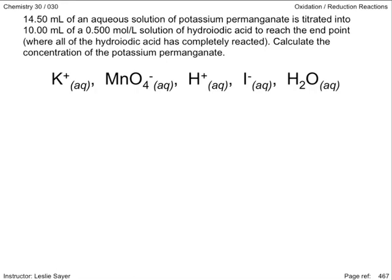Next we identify which substances or combination of substances are the strongest oxidizing agent and the strongest reducing agent. The permanganate ion in combination with the hydrogen ions are the strongest oxidizing agent, and the iodide ion is the strongest reducing agent.